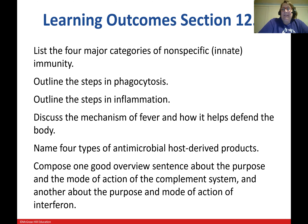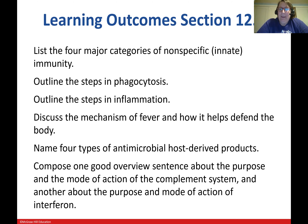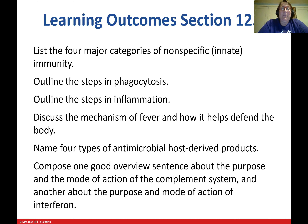Moving on to Section 12.3, the learning outcomes include listing the four major categories of nonspecific or innate immunity, outlining the steps of phagocytosis, outlining the steps of inflammation, discussing the mechanism of fever and how it defends the body, naming four types of antimicrobial host-derived products, and composing overview sentences about the complement system and interferon.